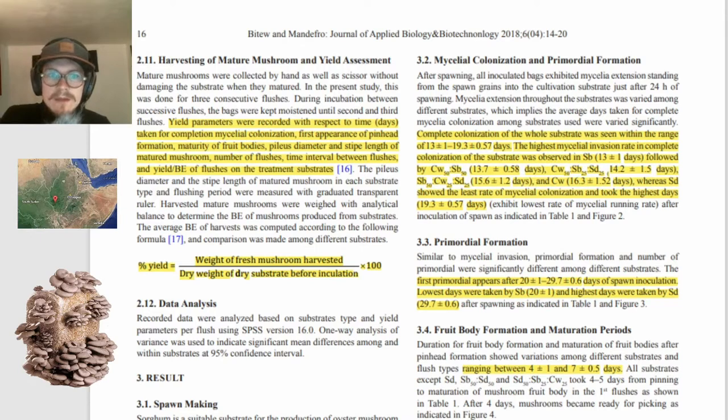So, the yield parameters were recorded with respect to time in days taken for completion, mycelial colonization, first appearance of pinhead formation, maturity of fruit bodies, pileus diameter, and stipe length of matured mushrooms. So once again, that's the fruiting, that's the cap. And then the stipe, the stem of the matured mushroom, number of flushes, time interval between flushes, and yield, or bioefficiency of flushes on the treatment substrates.